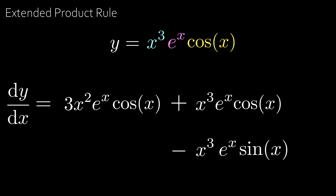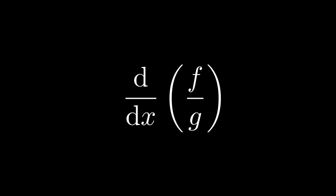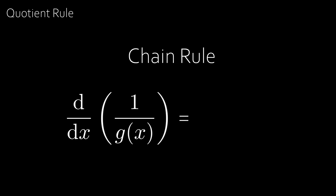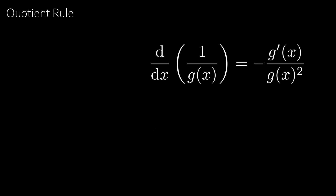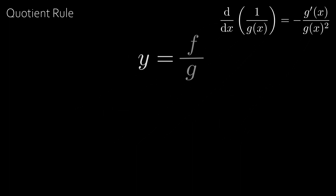Can we find the derivative of a function divided by another function? To do this we need the quotient rule — 'quotient' being another way of saying something divided by something else. Formulating the quotient rule requires the chain rule, covered in a separate video. The chain rule states that the derivative of 1/g(x) is minus the derivative of g over g squared. Suppose y equals some function divided by another function.